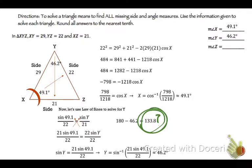Now we're going to take that angle, add it to the one we already had, so 49.1. You get 182.9, which is greater than 180. So that angle does not work. So the only possible measure for Y is 46.2.